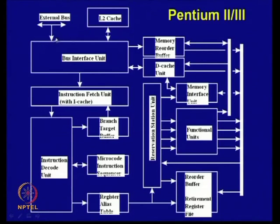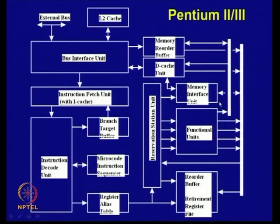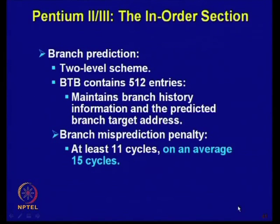The various units of the Pentium 2 and 3 architecture include: bus interface unit, instruction fetch unit, instruction decode unit, branch target buffer, micro-instruction sequencer, memory reorder buffer, data cache, instruction cache, L2 cache, memory interface unit, reorder buffer, and retirement register unit. The architecture has both an in-order section and an out-of-order section.